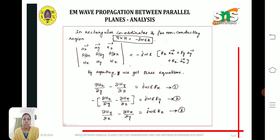In rectangular coordinates and for non-conducting region, del cross h equal to minus j omega epsilon e. Del cross h is the curl equation.